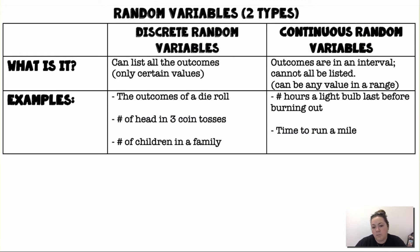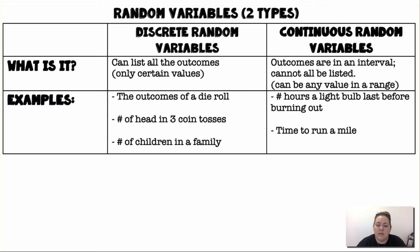Continuous random variables have outcomes in an interval and we cannot list all of the possibilities — it can be any value in a range. For example, the number of hours a lightbulb lasts before burning out could be 103.76 hours. Time to run a mile is broken down into seconds and milliseconds, so there are fractional parts — it's a continuous random variable.